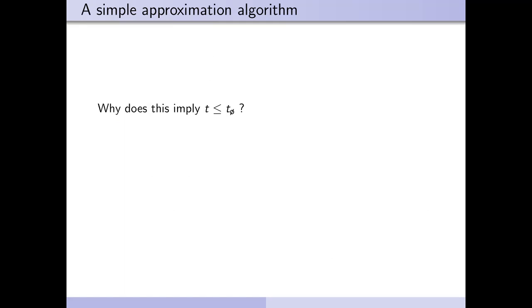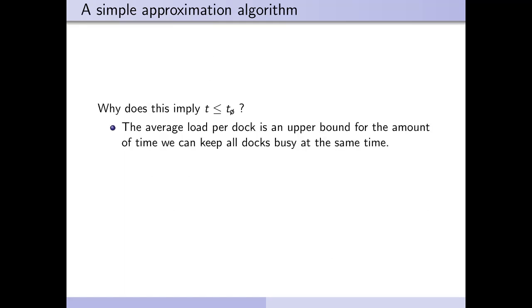Ok, and why does this imply that t is less than or equal to the average load per dock? Well the average load per dock is an upper bound for the amount of time we can keep all docks busy at the same time, without running out of repairs. And as we now know that all docks are busy at time t, the above implies that t is in fact less than or equal to the average load.